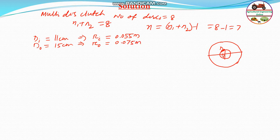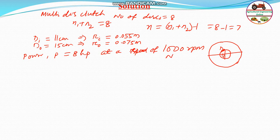The power to be transmitted is given as 8 HP at a speed of 1000 RPM. Also, the coefficient of friction μ between the contact surfaces is given as 0.08.